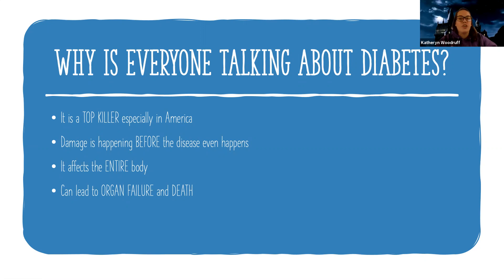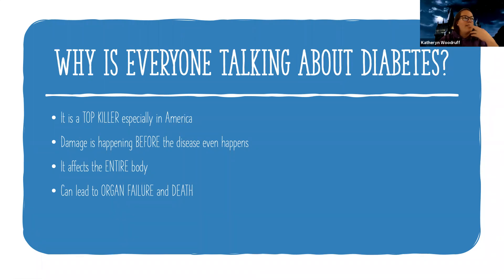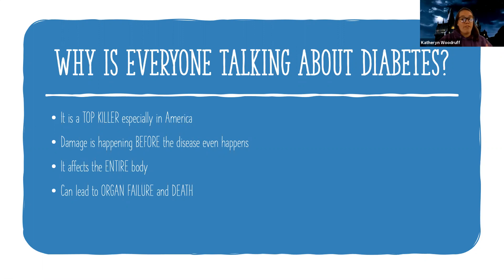Before it's even official, that sugar in the blood is going around and causing a lot of damage. It affects the entire body. So it's important to keep in mind that as much as it may seem like it's just a problem with the pancreas, this actually affects the whole body because glucose is in the blood. And where do you have blood? Everywhere. And the glucose affects those blood vessels, and it can lead to organ failure and death.